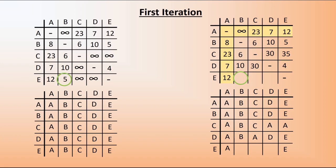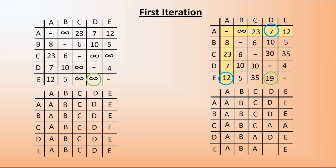Next row: 5 is smaller than 12 plus infinite, so 5 goes in with no change to B. For the next cell, infinite is definitely bigger than 12 plus 23 = 35, so 35 gets put in and A gets inserted. For our last cell, infinite is definitely bigger than 12 plus 7 = 19, so 19 goes in and we've made a change again. And that's the first iteration complete.